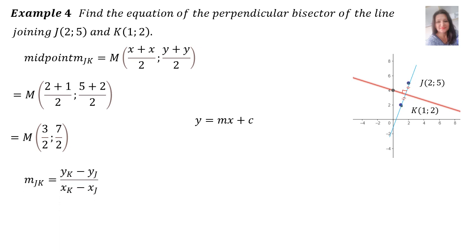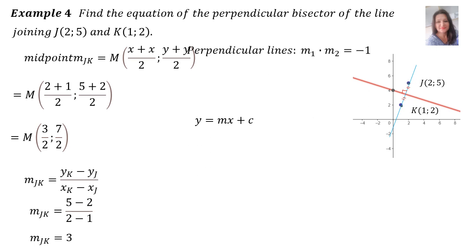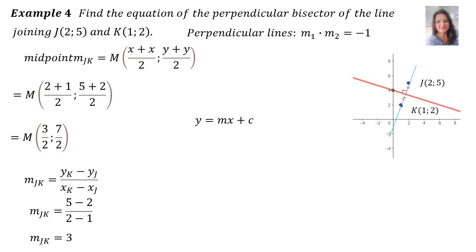For the gradient between J and K we use the gradient formula: (5 − 2)/(2 − 1) = 3. So the gradient of JK is 3. To find the perpendicular bisector's gradient we use m1 × m2 = negative 1. Our known gradient is 3, so dividing both sides by 3 gives the perpendicular gradient = minus a third.